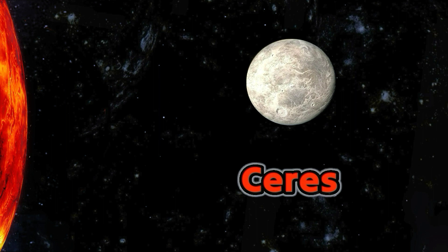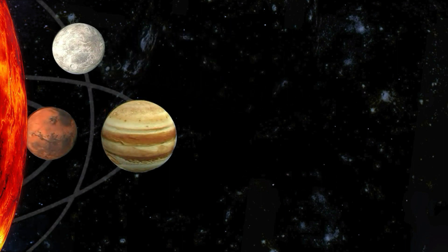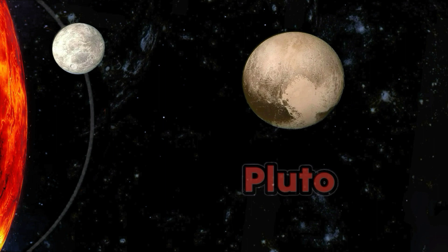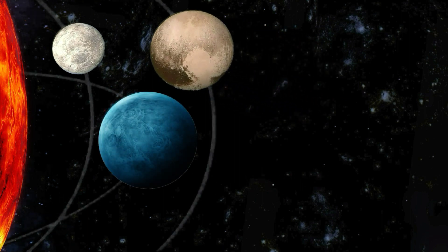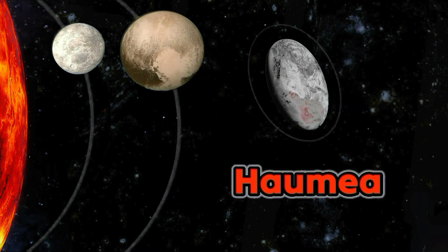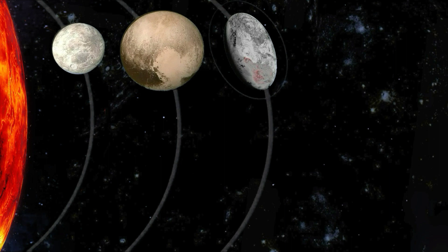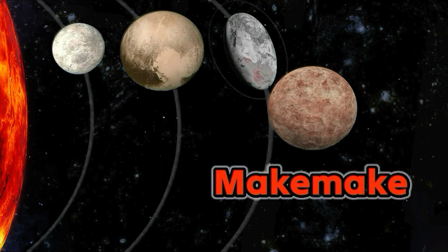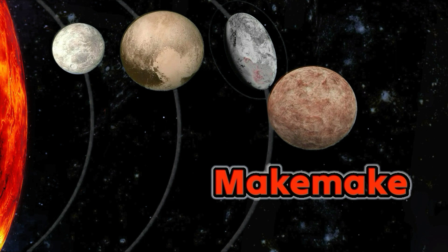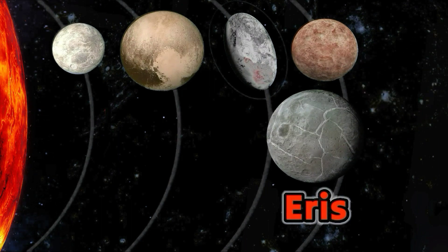Ceres. Ceres exists in the asteroid belt between Mars and Jupiter and shares its orbit with asteroids and small solar system bodies. Pluto. It lies within the Kuiper belt right after Neptune's orbit. Haumea. Makemake. Eris.